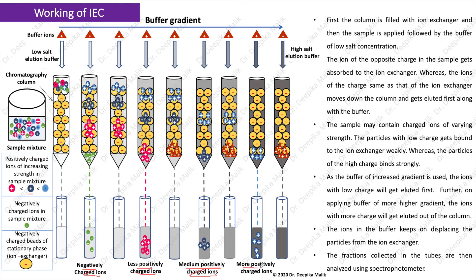The maximum positively charged light blue ions bind to the exchanger with a much stronger ionic interaction as compared to the other two ions, and therefore they get eluted out of the column last. To break the ionic interaction of the resin and the ion of the sample, buffers of increasing salt concentrations have to be used in a step-wise manner. In the diagram, the color of the buffer keeps on changing from light gray to dark gray depending upon the salt concentration from low to high. The ions in the buffer keep displacing the particles from the ion exchanger, indicated by brown colored triangles. The fractions collected in the tubes are then analyzed using a spectrophotometer.